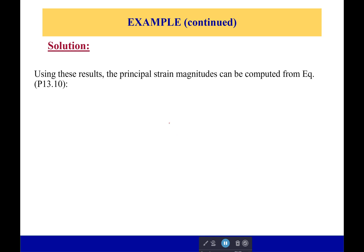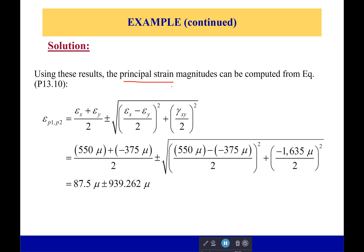Now, principal strain, principal stresses, it's literally just plug and chug. You just plug and chug. This is going to be our average normal strain, and right here, this will be the radius in Mohr's circle. And what we find then is that our average is going to be 87.5 microstrains, and then we're going to have a radius of 939.262 microstrains.